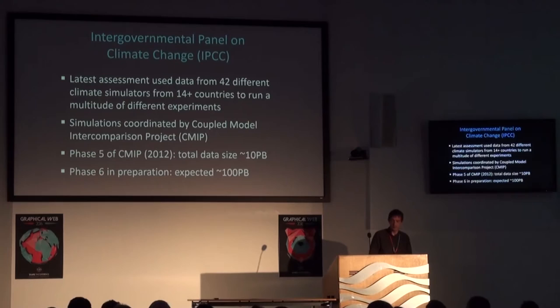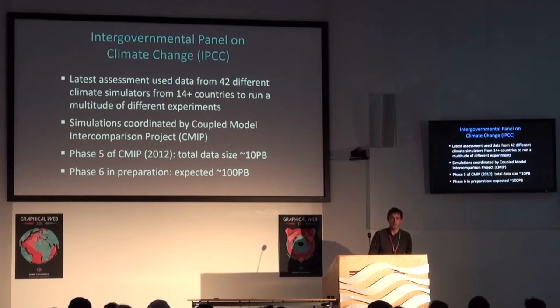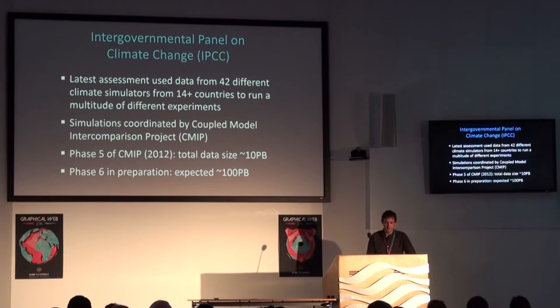The IPCC — the Intergovernmental Panel on Climate Change — assesses all of the evidence we have for changes in our climate. They have used 42 different simulators of the planet across at least 40 different models in at least 14 different countries. This is a big data problem. The simulations are coordinated by a group called CMIP. The last phase, Phase 5, produced about 10 petabytes of data. The next big round of assessments, starting now, is expected to produce about 100 petabytes of data. We're facing massive challenges in downloading, using, and analysing this type of data.